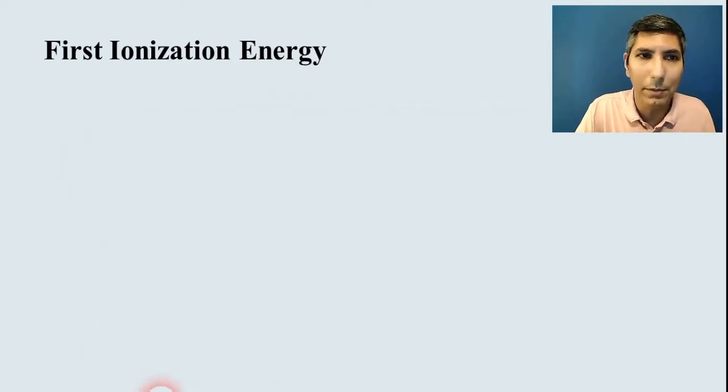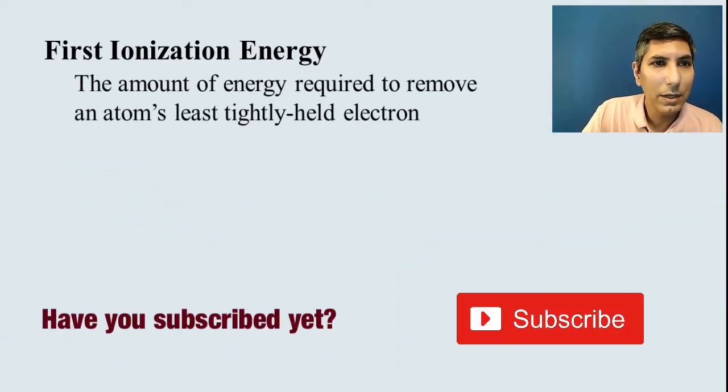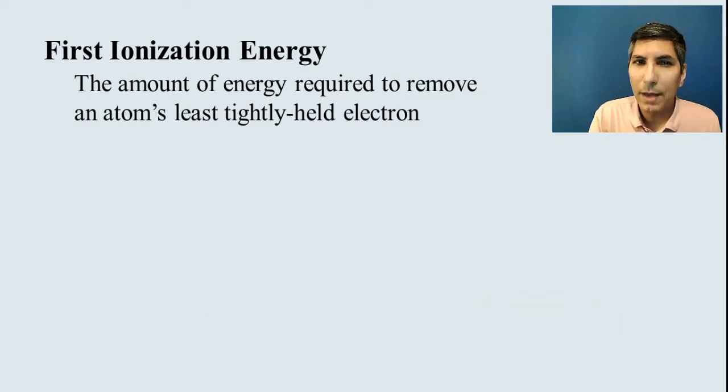Now let's backtrack a bit and talk about first ionization energy. We talked about this two videos ago in the section 7 first video, part A there. And we said that the first ionization energy is the amount of energy that's required to remove the very last electron in an atom. That's the least tightly held electron, the one that's farthest away.